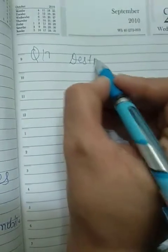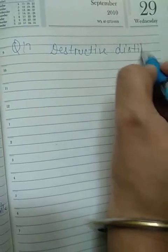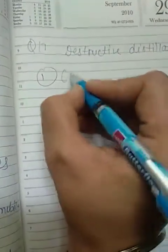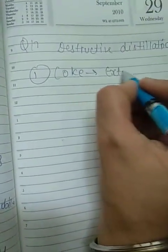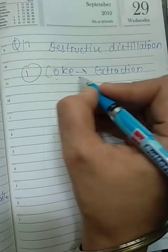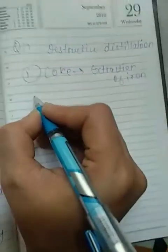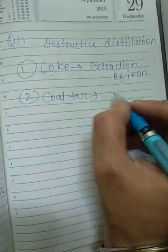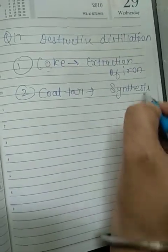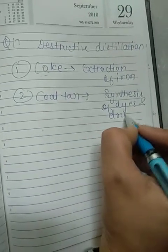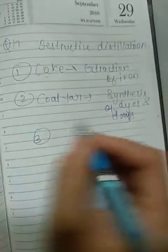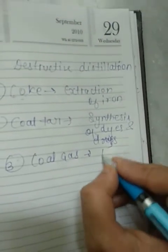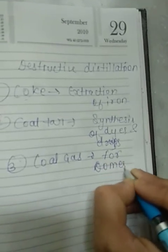What products do we obtain from the destructive distillation of coal? When we heat coal in the absence of air, that process is known as destructive distillation, and we get three products. First is coke, used in the extraction of iron. Second is coal tar, which forms the starting material for the synthesis of dyes and drugs. Third is coal gas, used as a fuel for domestic cooking.